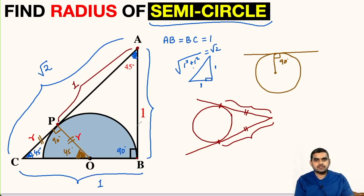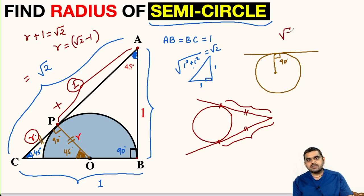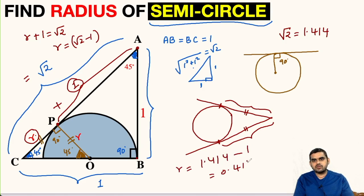Now it's very easy to find the radius because R plus 1 is equal to root 2. So radius will be root 2 minus 1 units. If you want, you can express root 2 as 1.414. So radius will be equal to 1.414 minus 1, that is 0.414 units.